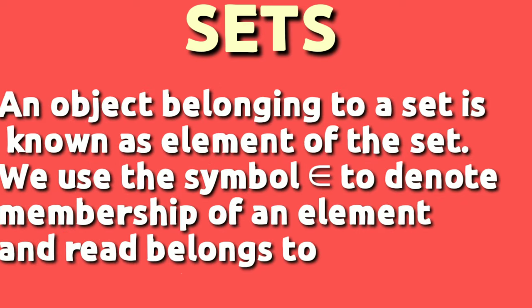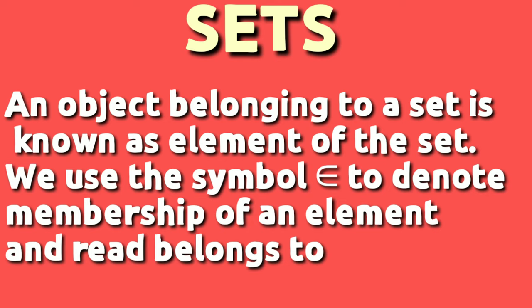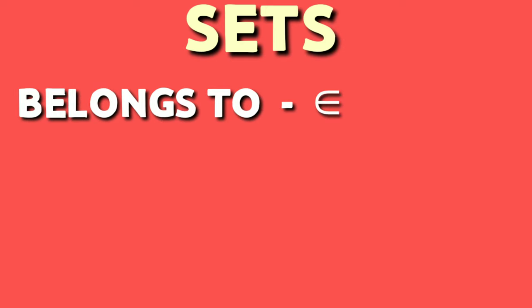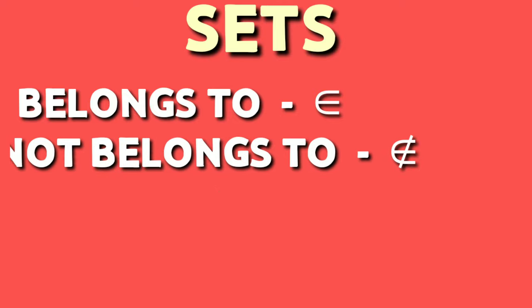An object that belongs to a set is known as an element of the set. Its symbol is given here and it reads as belongs to. Belongs to and not belongs to symbols are given here.